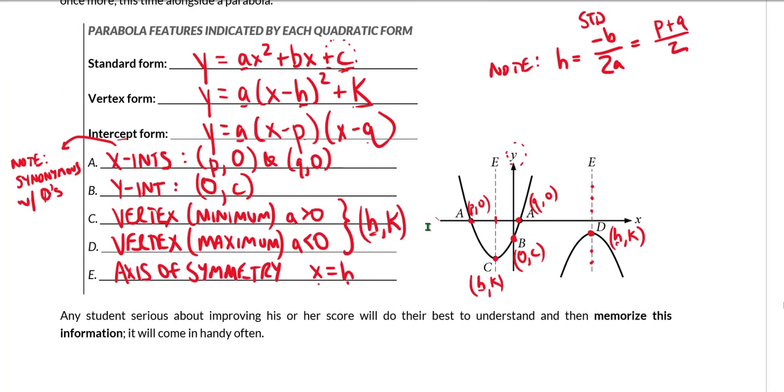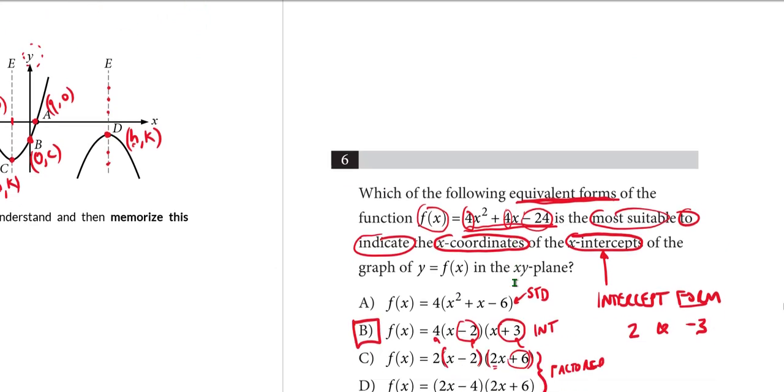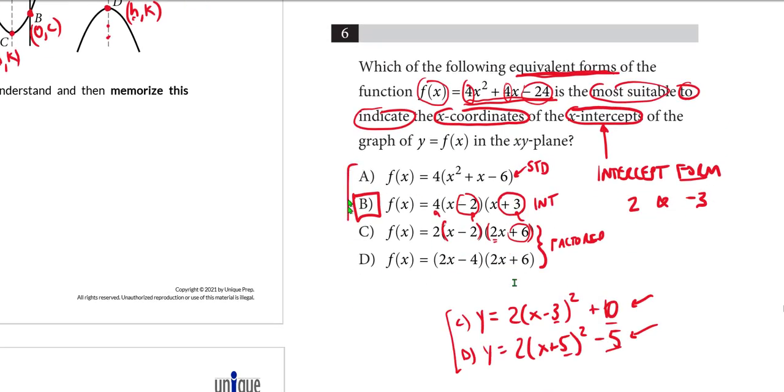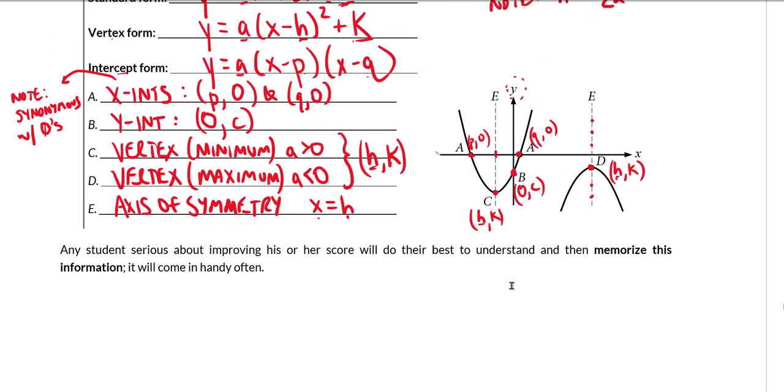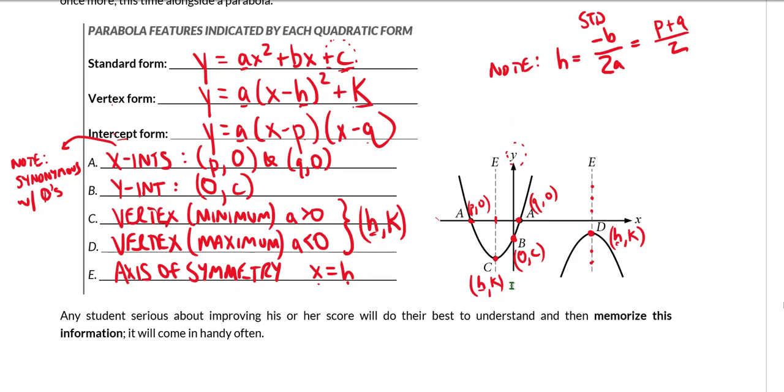The point is that if you at least can memorize the forms - the three forms: standard, vertex, intercept - you'll have a leg up on questions that are asking you to pick a form of a quadratic that reveals certain features of a parabola, of the graph of the quadratic. So that is it for the forms of a quadratic and the information that we can extract from them and what each form reveals in terms of the parabola. As it says at the bottom of the page, it would definitely behoove all students to make sure that they have this information memorized. Of course, it's better to understand it first, but also good to just make sure you have it memorized. Many questions will become a lot easier when you are fluent with this information.